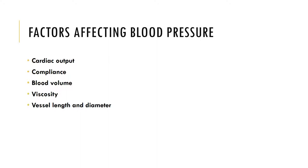Peripheral resistance is the amount of opposition or friction blood encounters as it flows through the vessels. As resistance increases, blood pressure increases; as resistance decreases, blood pressure decreases. Vessel length is one factor: friction occurs between the moving blood and the walls of the vessel. The longer the vessel length, the greater the surface area in contact with the blood, and therefore the greater the resistance. The most dramatic changes in blood vessel length occur between birth and adulthood; once we reach adulthood, vessel length is relatively constant.